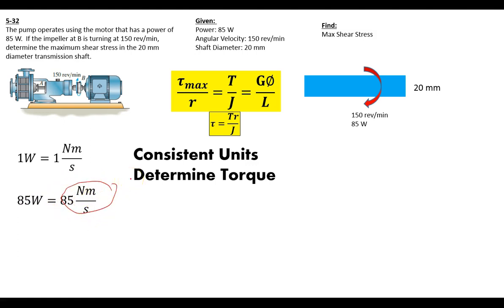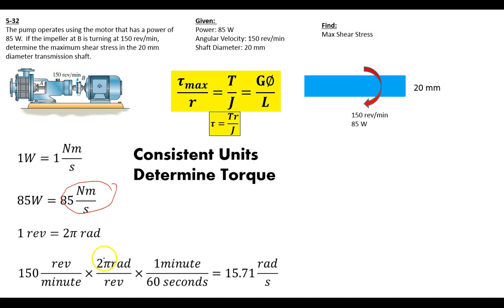Now that we've got our watts, let's convert this velocity. 2π radians to a revolution, 60 seconds to a minute. We set that up: 150 revolutions per minute, 2π radians per revolution, so our revolutions cancel. We've got one minute for every 60 seconds, so we can cancel our minutes. We're left with radians per second, 15.71 radians per second.